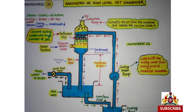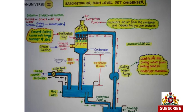इस type के Jet Condenser की कुछ Advantages/Applications भी हैं। इसका प्रयोग Salt Manufacturing Companies, Sugar, Milk और Food Plants, Canneries, Chemical Industries, Petroleum Refineries, तथा Pulp and Paper Mills में किया जाता है।